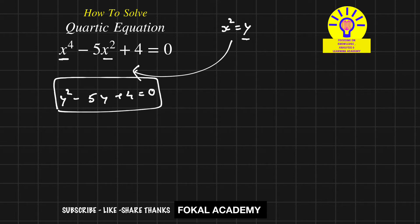We know the quadratic formula: y = (-b ± √(b^2 - 4ac))/(2a). For this equation, a = 1, b = -5, and c = 4.